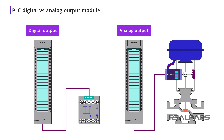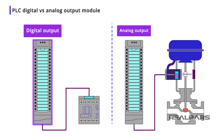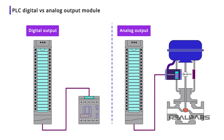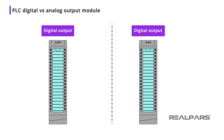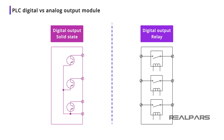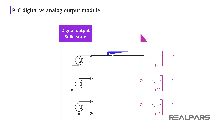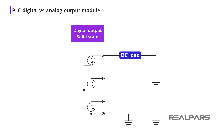As we've discussed in our other videos, the two types of PLC Output Modules are Digital and Analog. Drilling down even further, Digital Output Modules can be Solid State or Dry Relay. The focus of our video is on Solid State Output Modules operating DC loads.